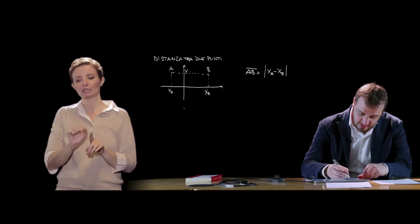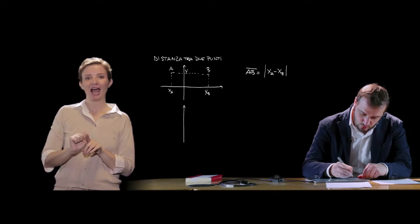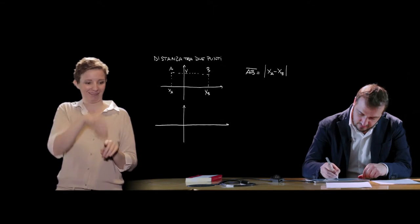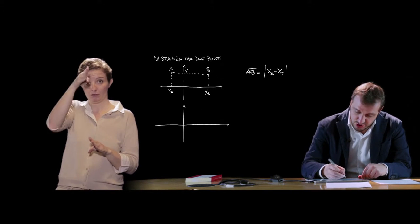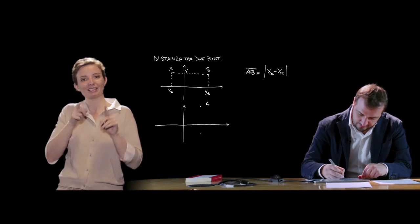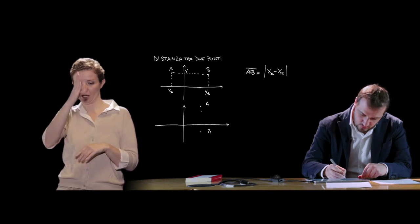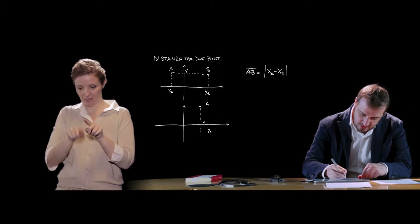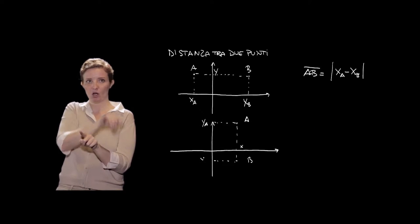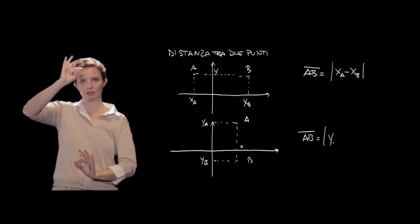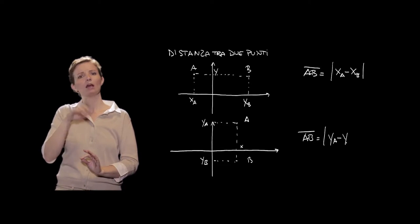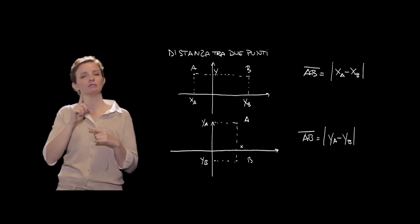In maniera analoga, se i due punti sono allineati lungo un asse verticale, ossia caratterizzati dalla medesima ascissa x, ma da ordinate differenti yA e yB, per trovare la distanza tra i due punti, ovvero il segmento AB, basterà fare la differenza in valore assoluto delle loro ordinate.